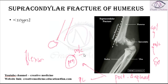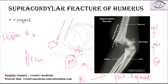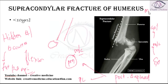Diagnosis of supracondylar fracture can be done with the help of X-ray, through the olecranon fossa. The most consistent sign is tenderness, whereas the pathognomonic sign is abnormal mobility followed by crepitus. In some cases, X-ray can be missed — this is called a hidden fracture or occult fracture. In such cases, presence of a fat pad sign may be seen on X-ray.